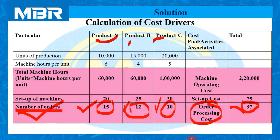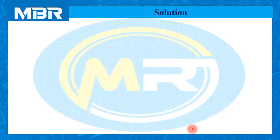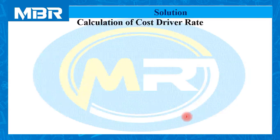In this question, information related to cost drivers was not given directly. So first of all, we have to read the question very carefully. After reading it carefully, try to establish the relationship between different expenditures and different activities. Using the scientific base, calculate total number of cost drivers: 2,20,000 for machine hours, 75 for setups of the machine, and 37 for number of orders. Once you calculate cost drivers based on logical application, it is very easy to solve the problem.